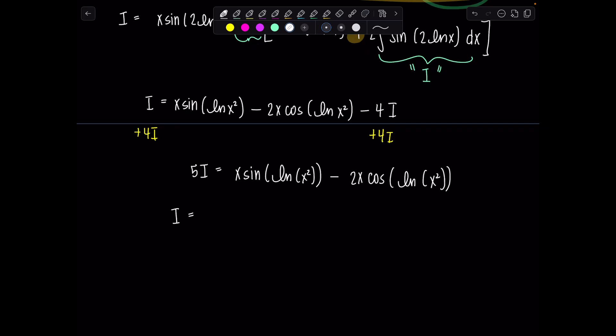And then I'm also noticing, we can factor out an x from both terms. Can we not? Indeed we can. So we have x over 5 times sine of ln of x squared minus 2 cosine ln of x squared, closer up, plus c. Et voila.